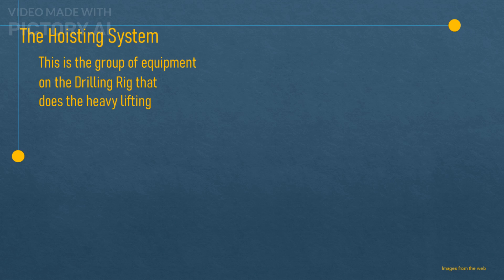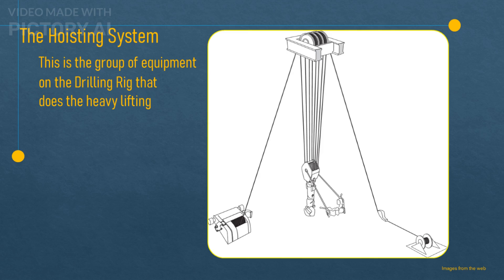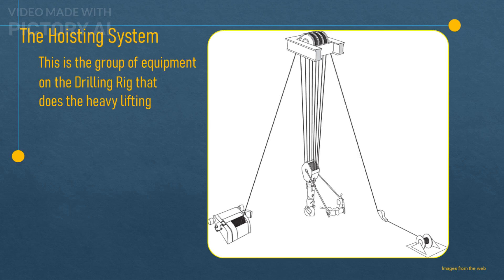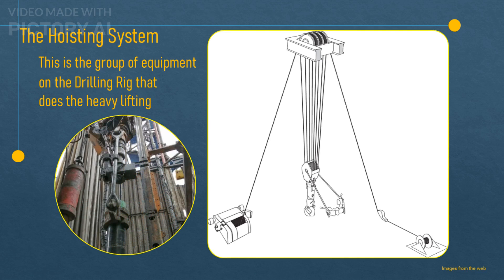The hoisting system is the part of the rig that does the heavy lifting. It can lift and lower the drill string, which is the long pipe that drills into the ground. And it can also lift and lower casing and tubing, which are the pipes that line the well and transport fluids.